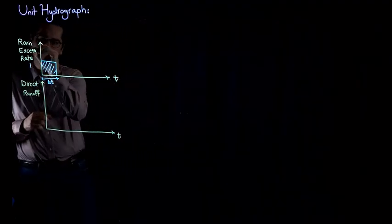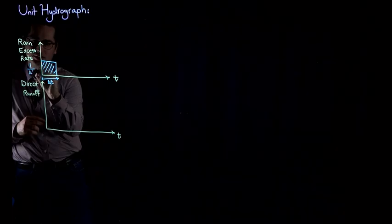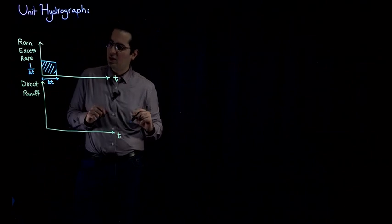So if I want to find the rate of rainfall excess, it would be one unit divided by time, which is delta T. So this is the rate of rainfall excess. All right.